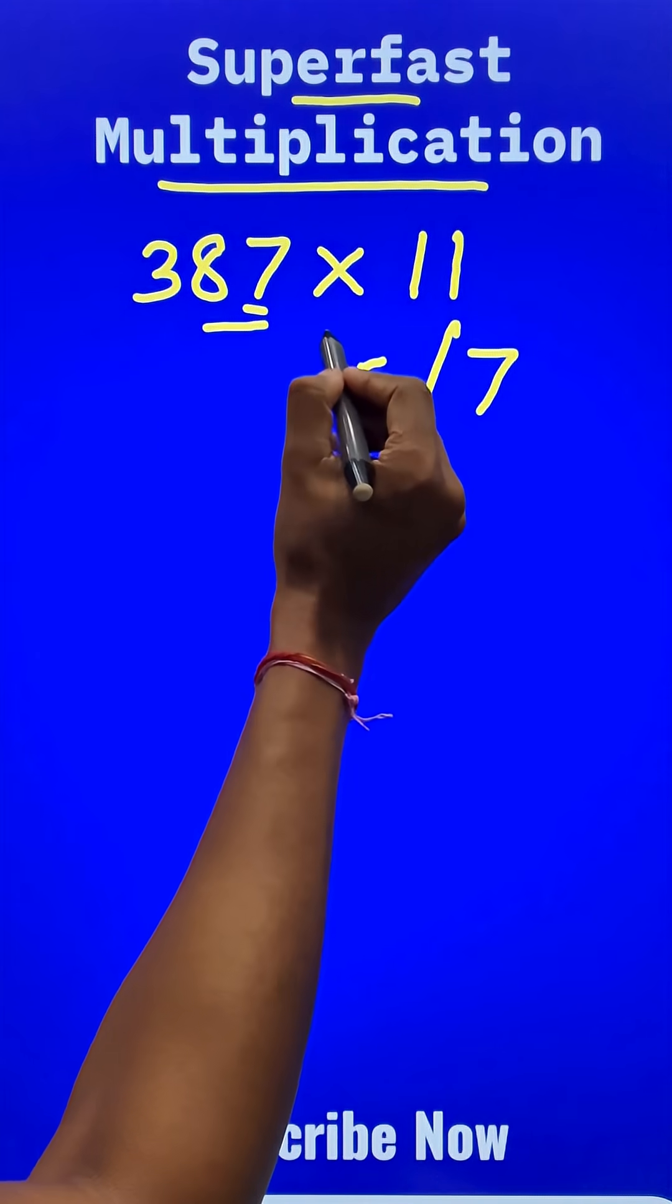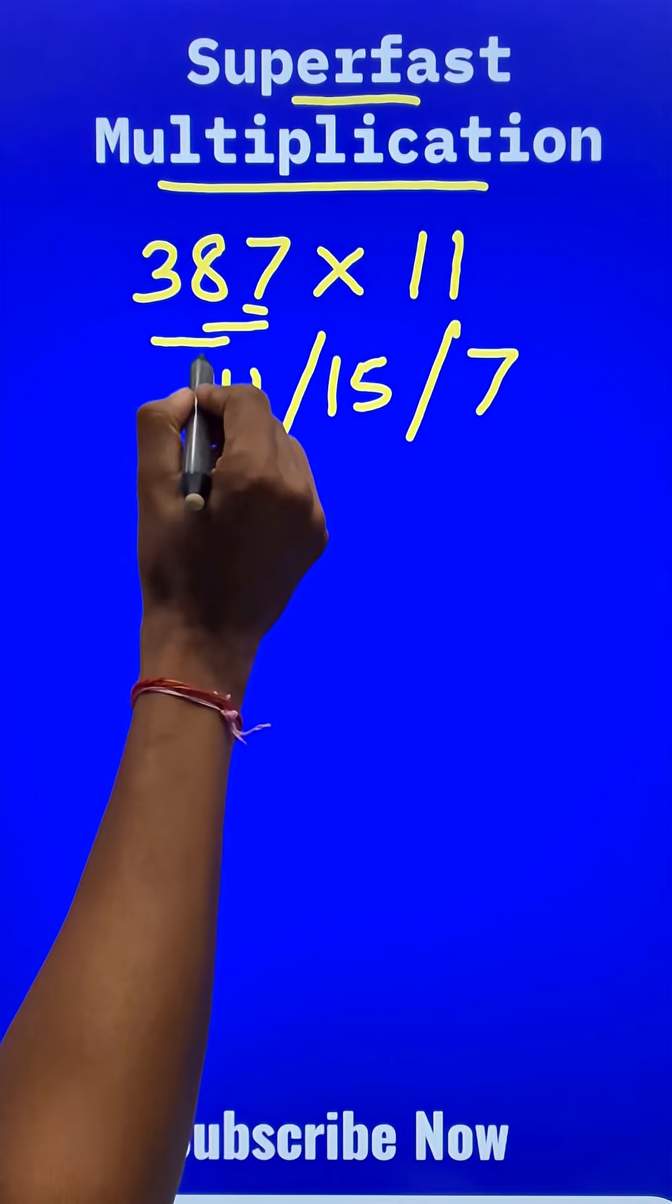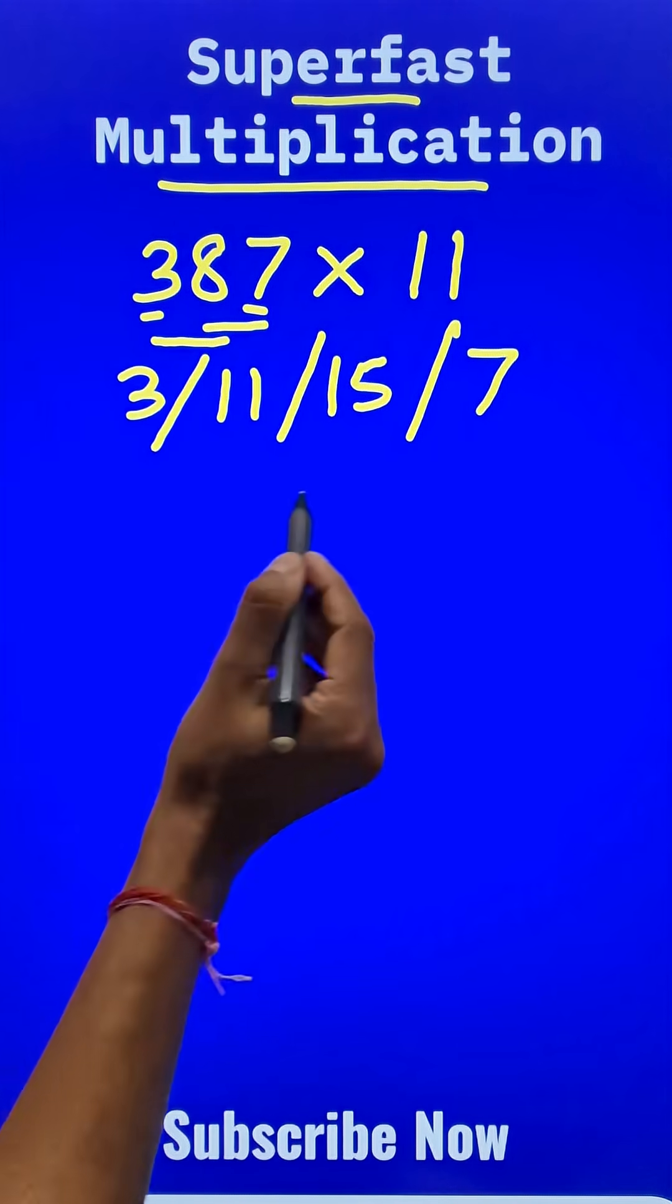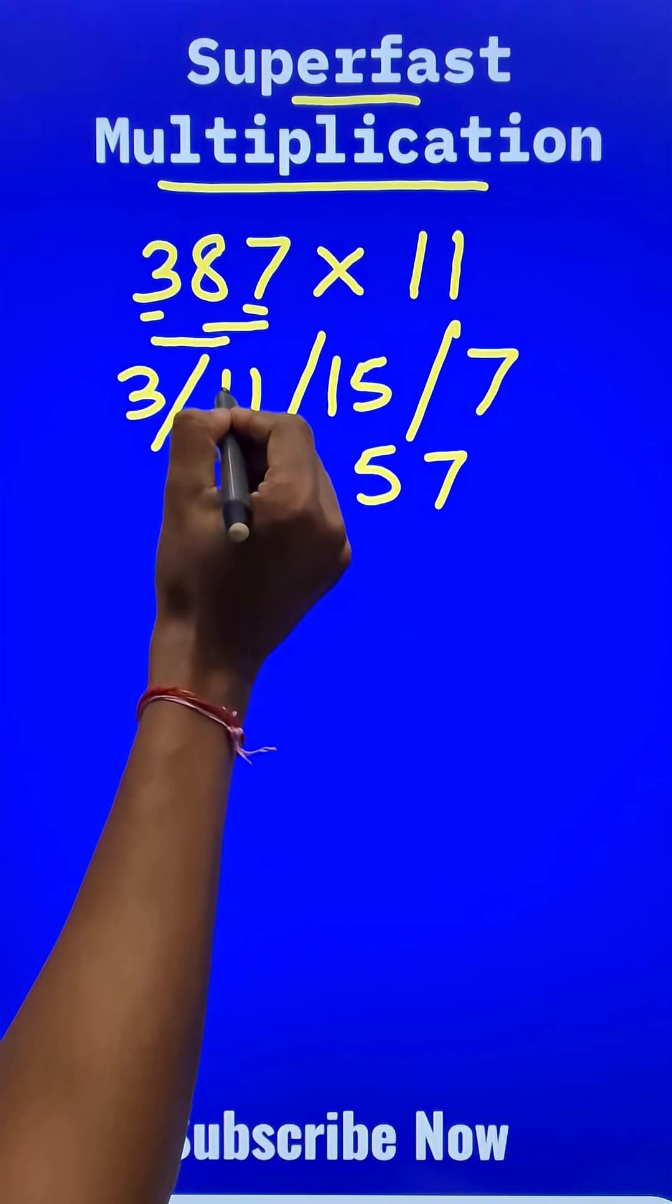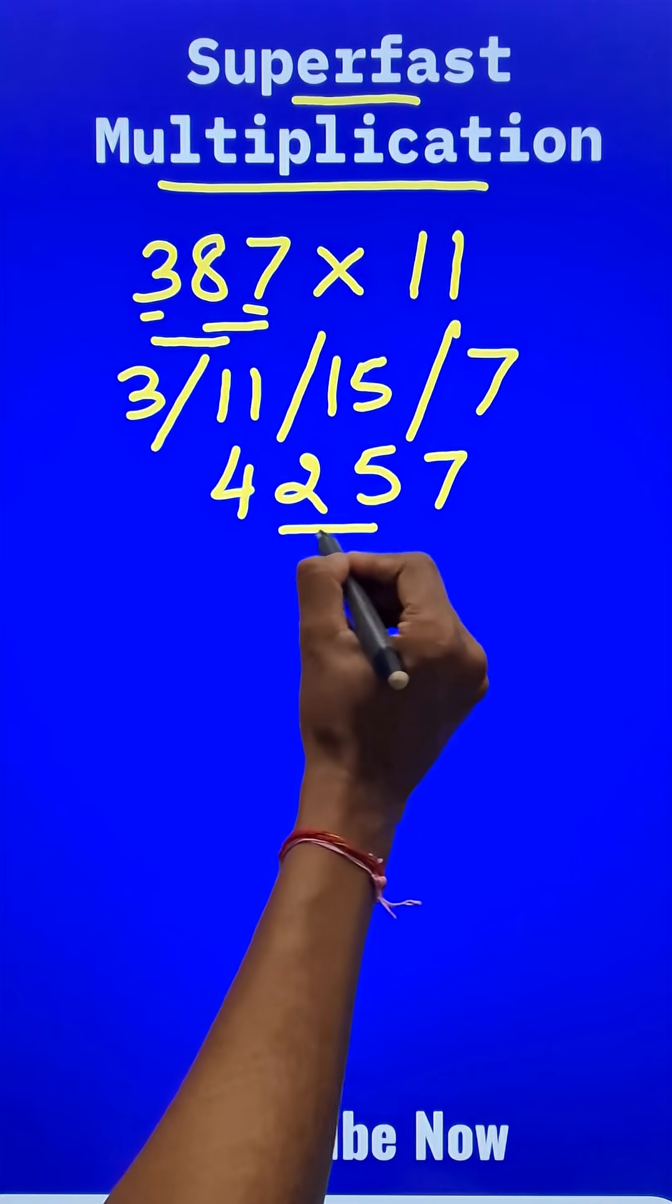7 plus 8 is 15, and then 8 plus 3 is 11, and then the first digit is to be written as such. Now start writing from the unit digit: 7, 5, 1 carry, so this becomes 12, 2, 1 carry, so this becomes 4, and here is your answer.